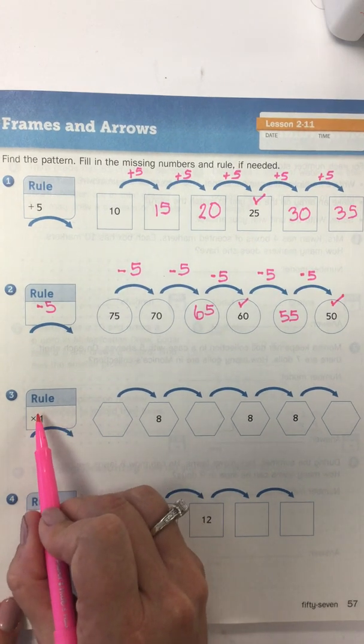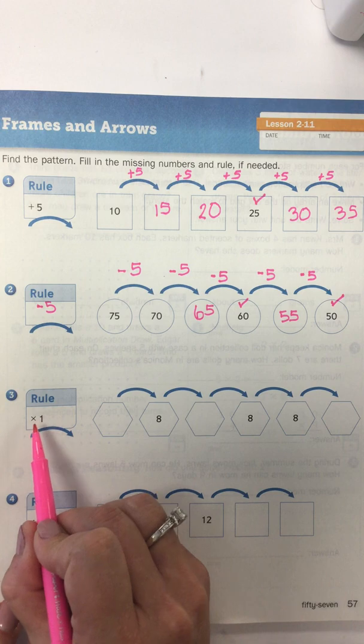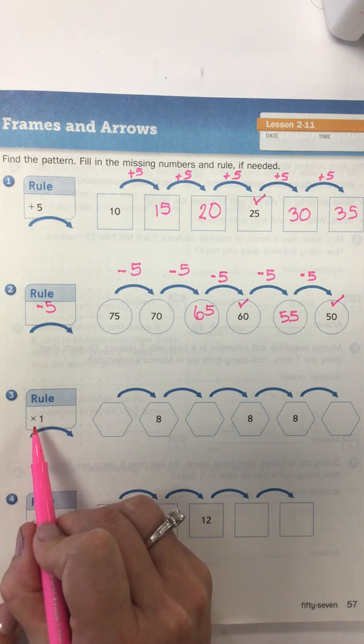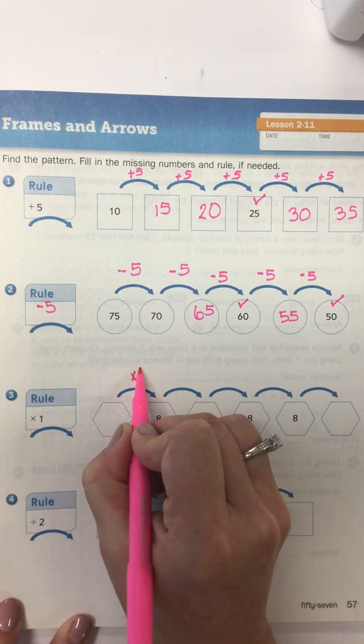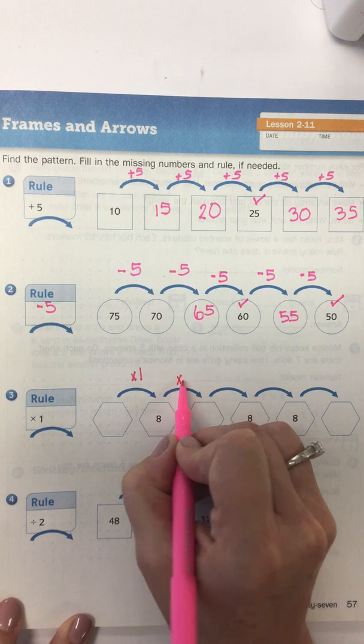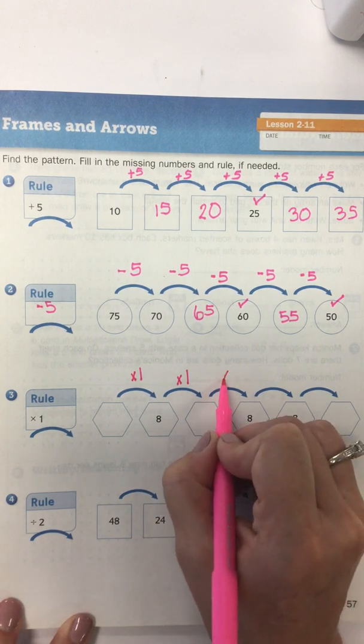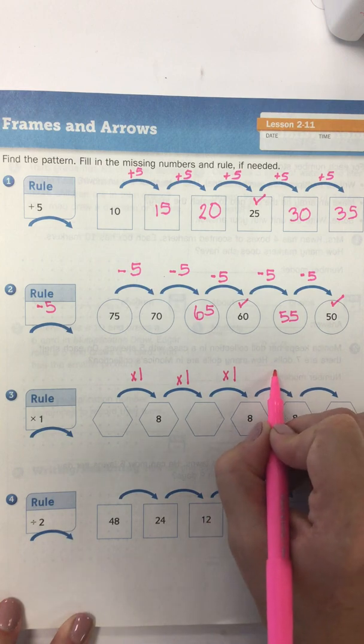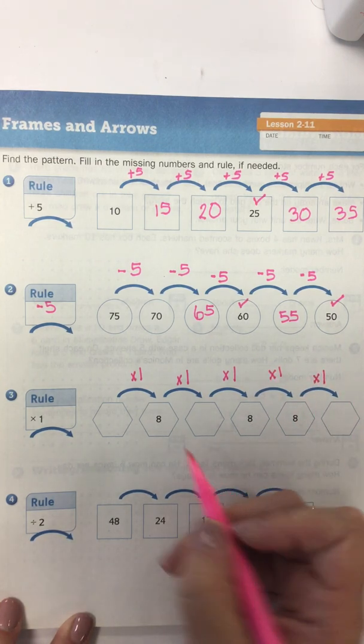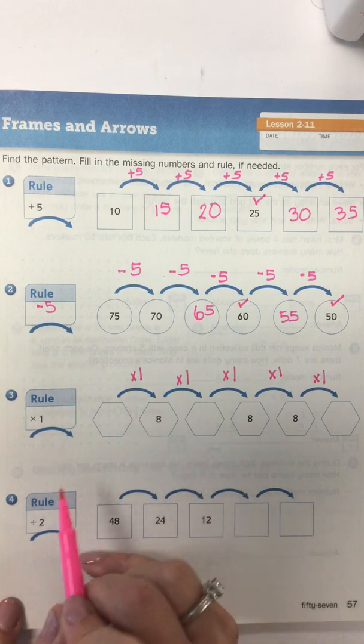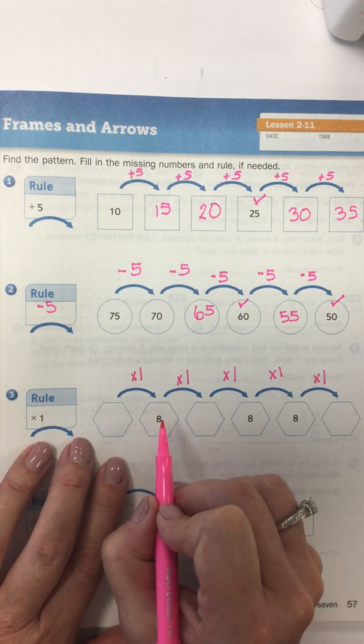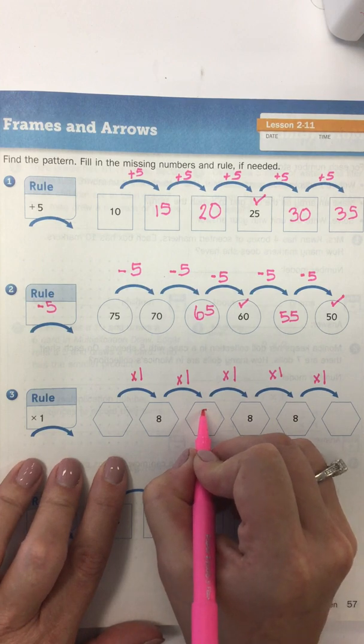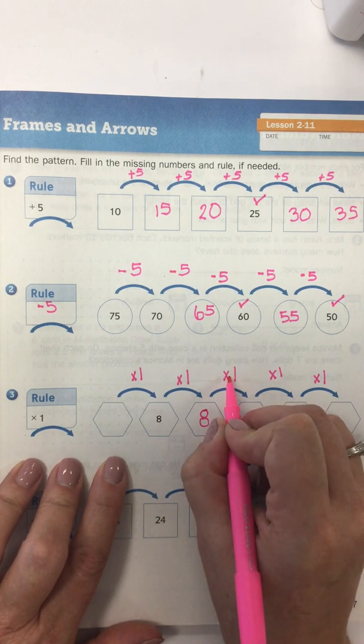Now we're going to move into some multiplication. This one tells me my rule is to multiply by one, but I don't have to be concerned because I know that anything times one is itself. So let's start by putting a times one on every arrow. So something times one equals, and then eight times one equals something times one. So something times one equals eight. I'm not really sure yet. So let's see if we can find our pattern later. Well, I do know eight times one is eight, and eight times one is eight,